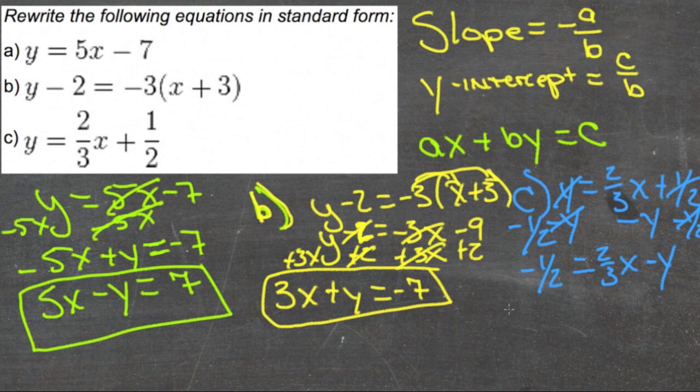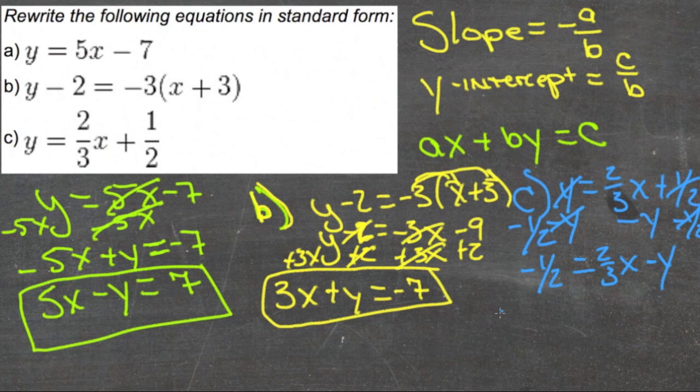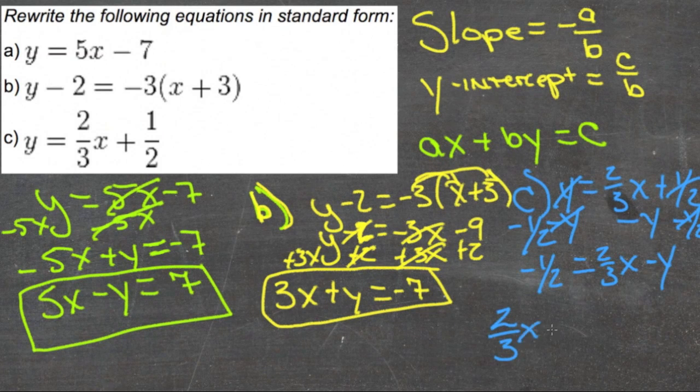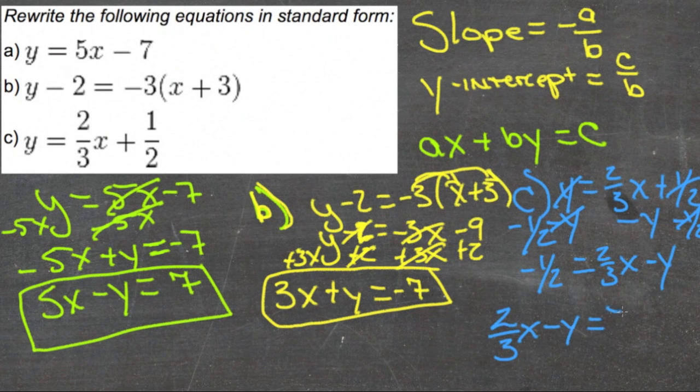If it looks more convenient, you can swap the sides of the equal sign, although it really doesn't matter. But then it would look a little more like standard form: two-thirds x minus y equals negative one-half.